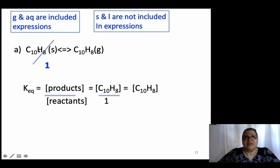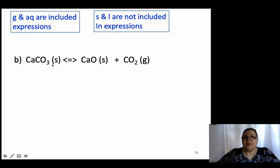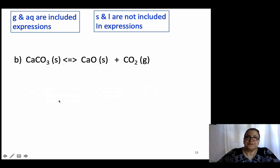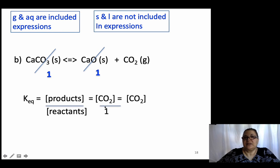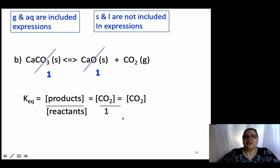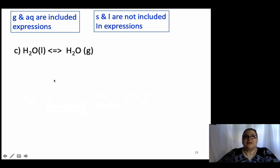When you see a solid or liquid, cross it out, put 1, and write the expression as usual. For example, calcium carbonate dissociates into calcium oxide and carbon dioxide. Both CaCO₃ and CaO are solids — cross them out, put 1 — and the expression is just [CO₂] over 1. The same applies for liquids: cross them out and put 1.